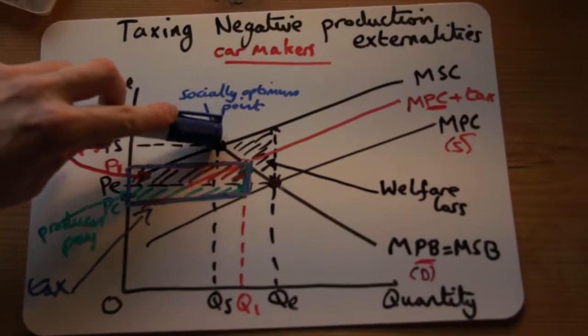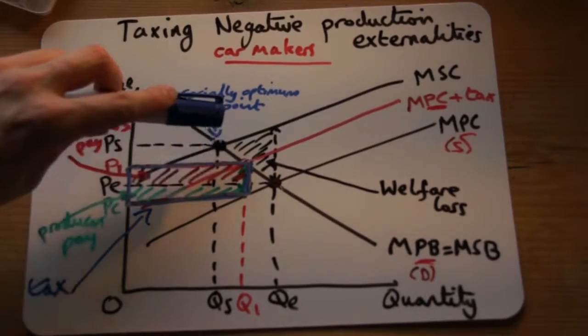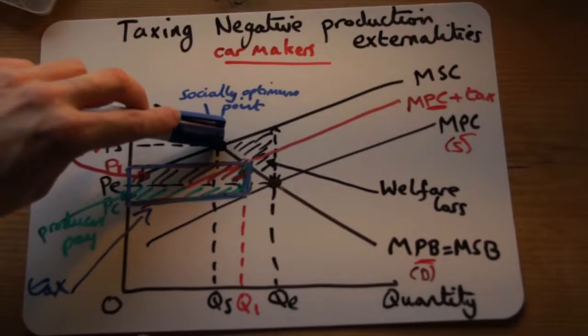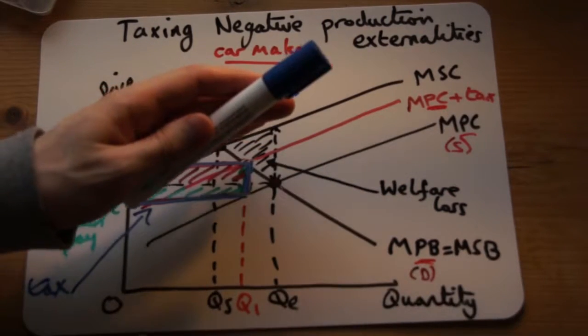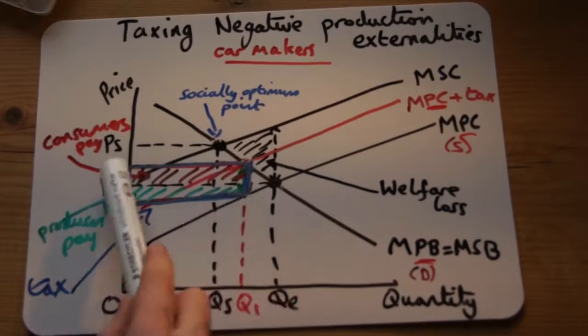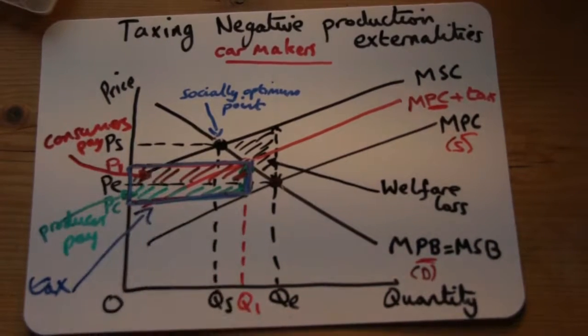So just shift the supply line upwards with the tax and show what the entire tax is and who pays what as well.